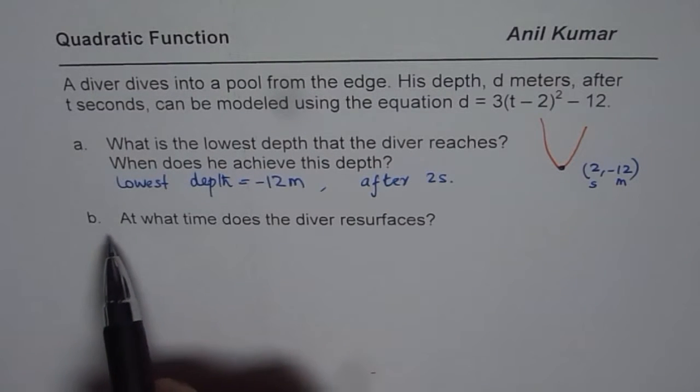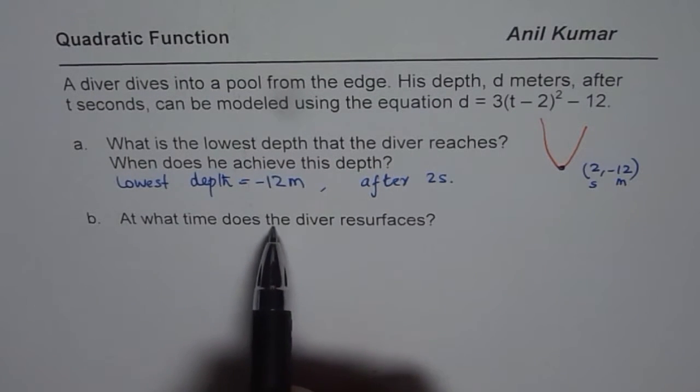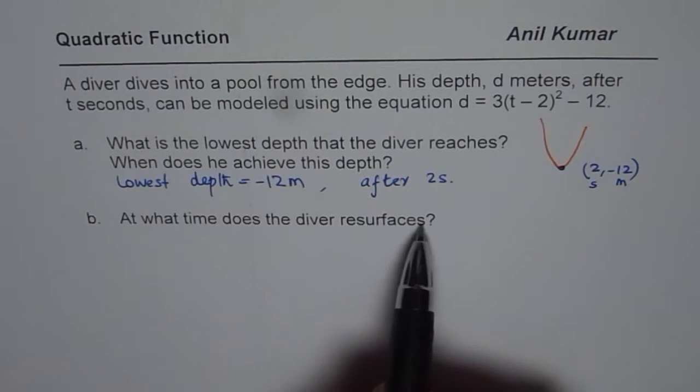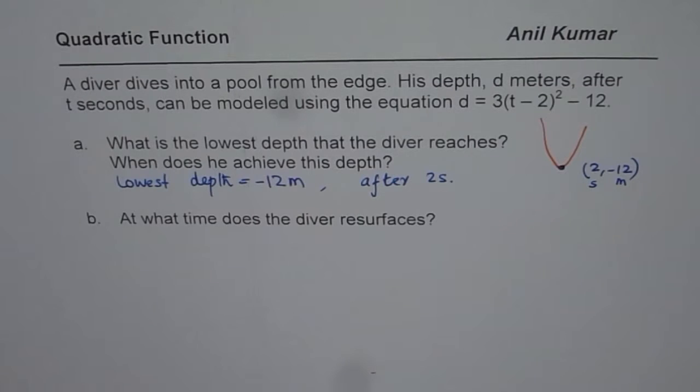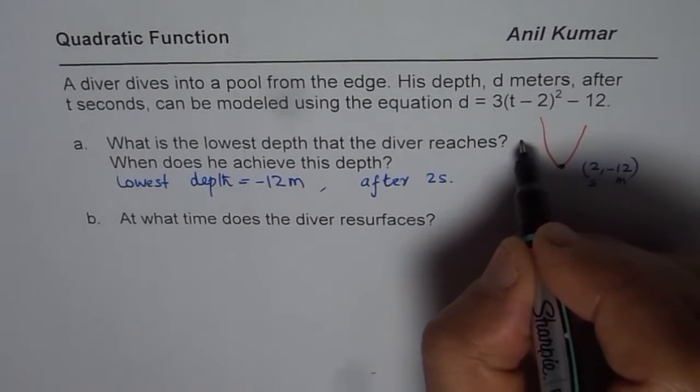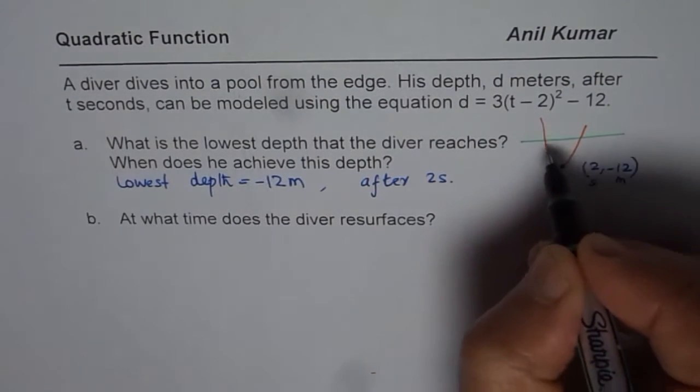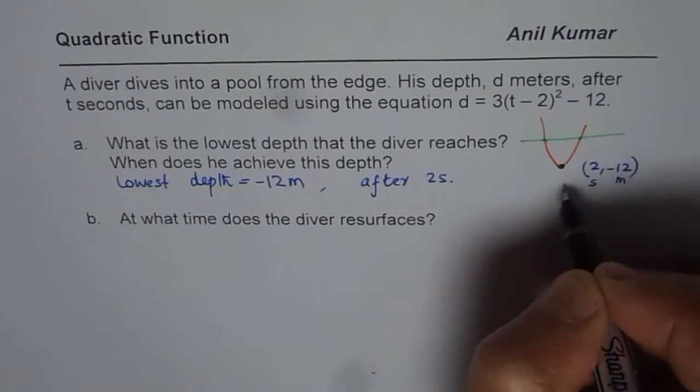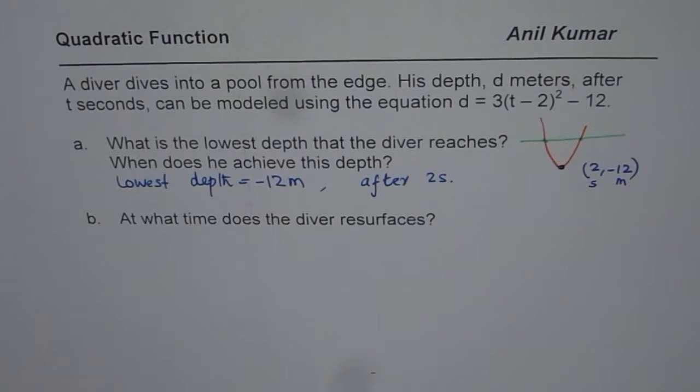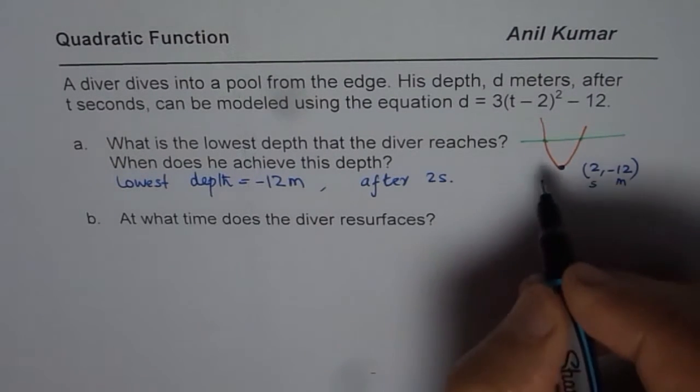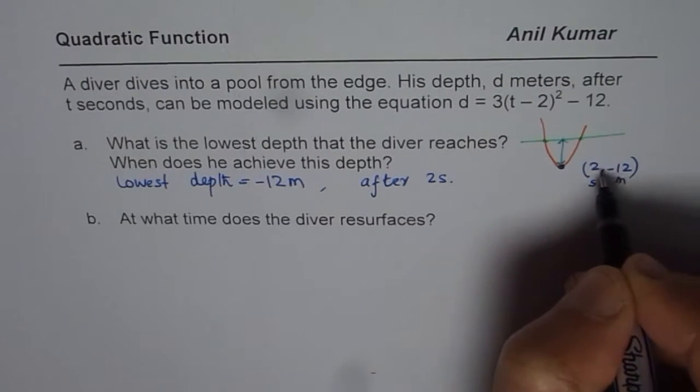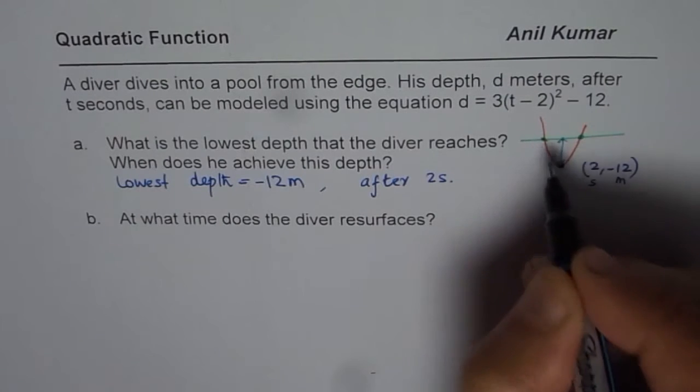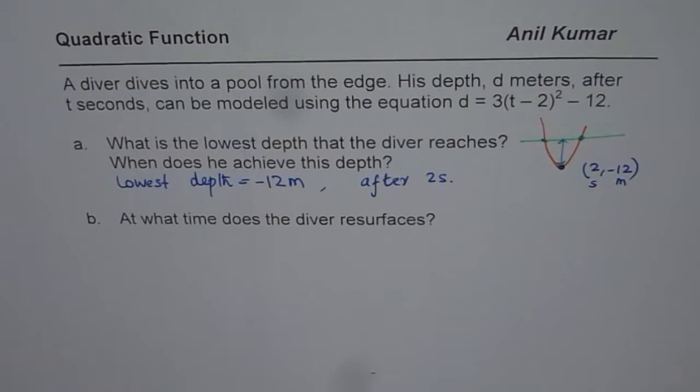Part B is: at what time does the diver resurface? When we say resurfaces, what does it mean? It means that the depth is 0. The idea here is that this depth from here to here is 12, and resurfaces means when depth is 0.